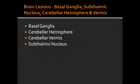What are some of the consequences of cerebellar vermis lesion? If the cerebellar vermis is lesioned, it will lead to truncal ataxia and dysarthria. Dysarthria is difficulty articulating, or difficulty speaking.